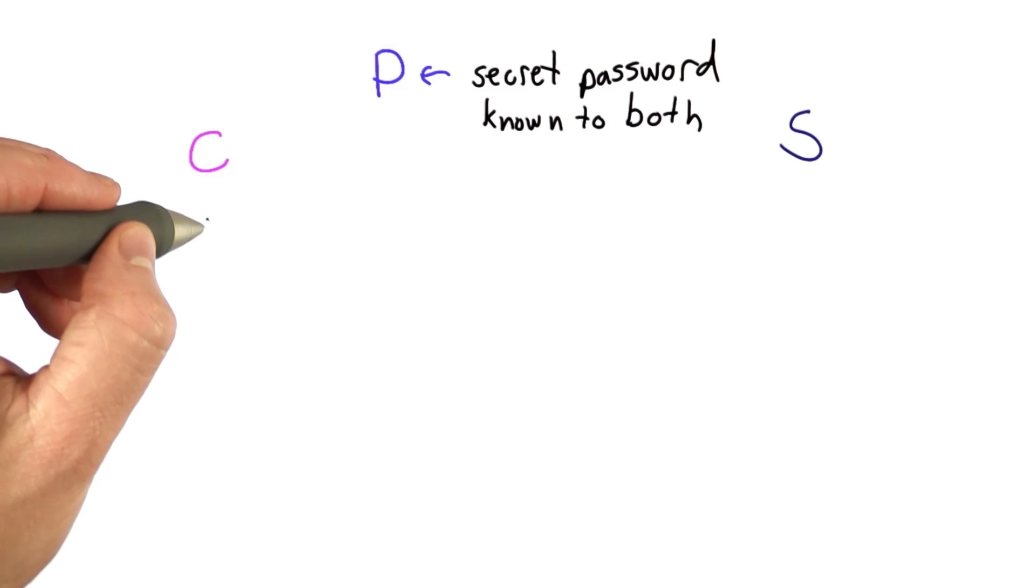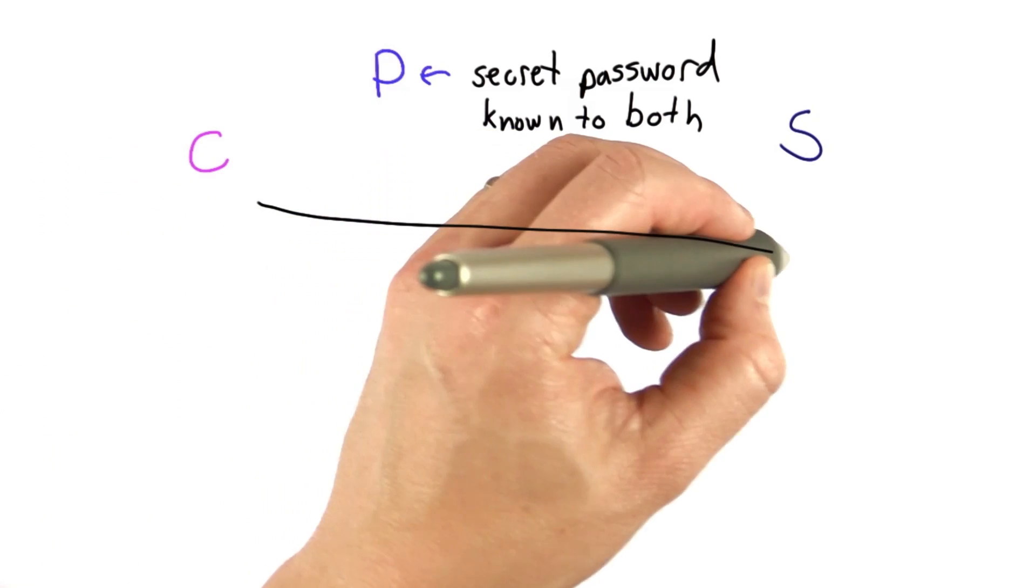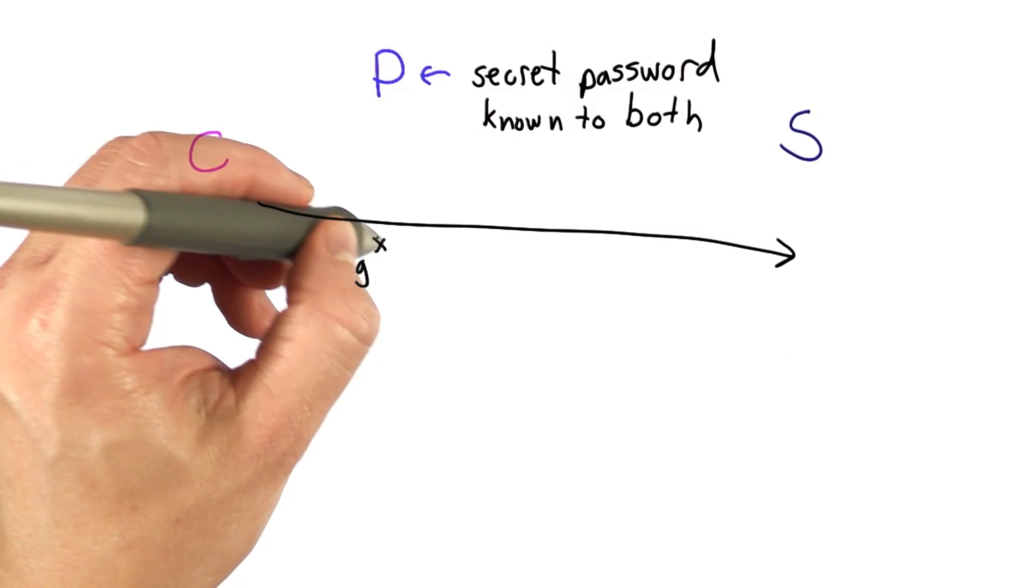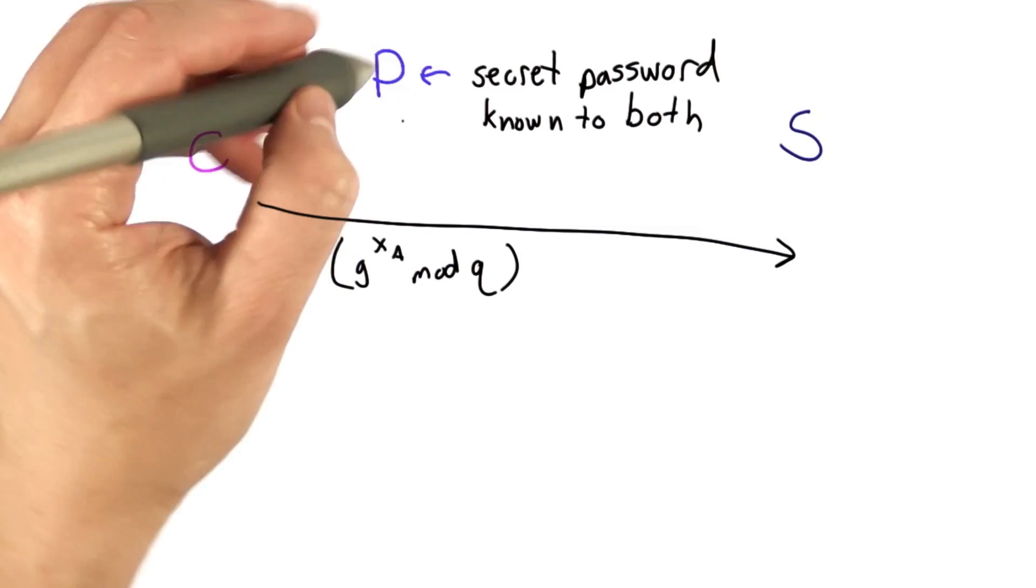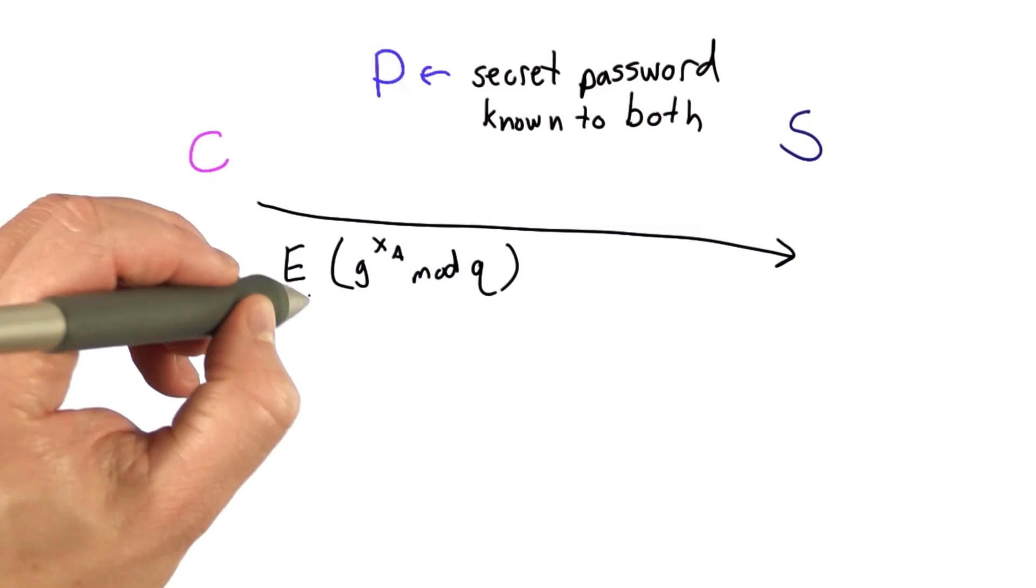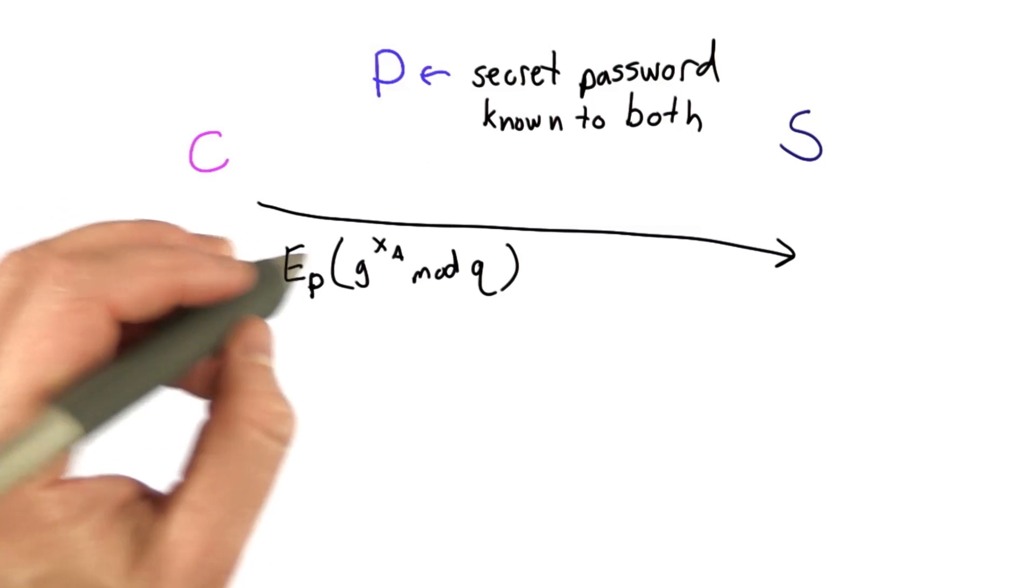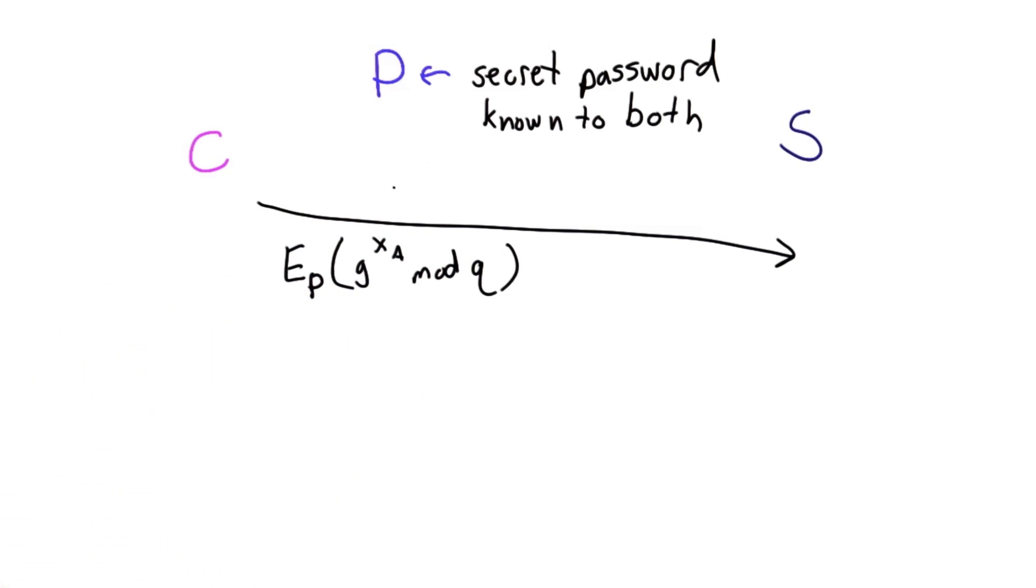The way this protocol works, the message that the client will send to the server, instead of just being the message that would be sent in Diffie-Hellman, is now that message encrypted using the password. This is symmetric encryption using P, the message that would have been the message in the Diffie-Hellman protocol. In addition to that, we also need to send the name of the client, let's say that's Alice.